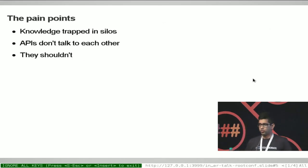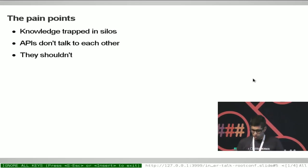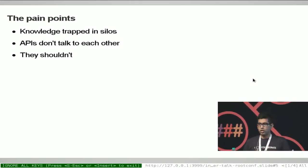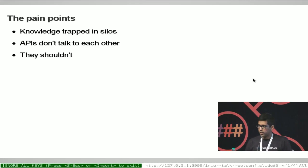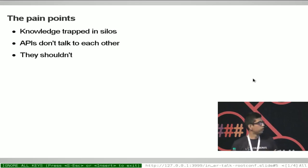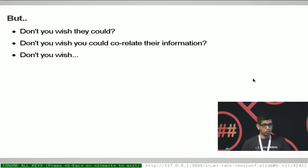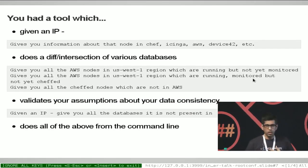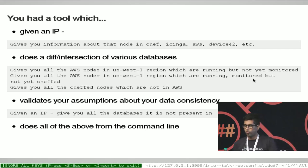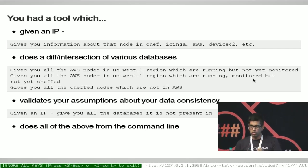But there are some pain points associated with it. All of the knowledge about a particular node is distributed across all of these databases, so your knowledge is trapped in silos. Their APIs don't talk to each other — and they shouldn't, because each database is supposed to do one thing and do it right. But at this point you have to ask yourself: don't you wish these APIs could talk to each other? Don't you wish you could correlate that information? Give me an IP and I will give you information about that node in Chef, Chinga, AWS, Device42. You shouldn't have to fire 10 APIs to get all of this information — you should be able to do it from a single point.